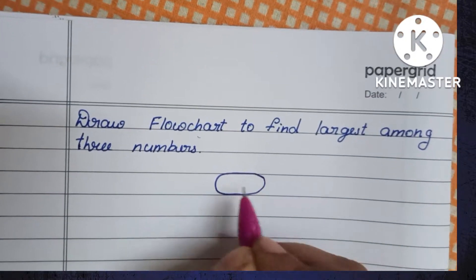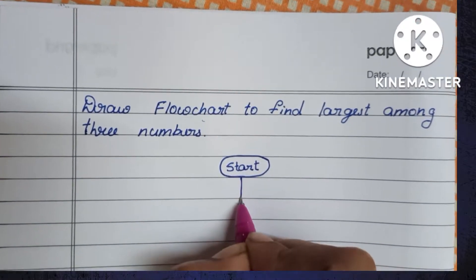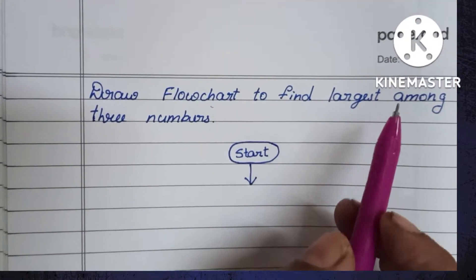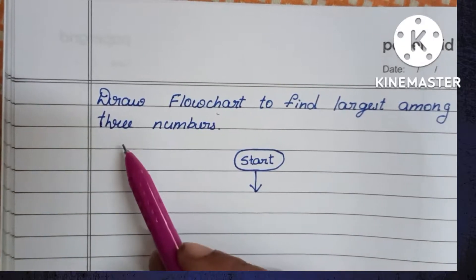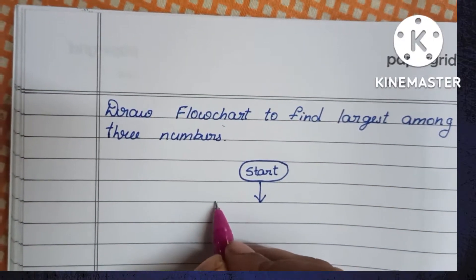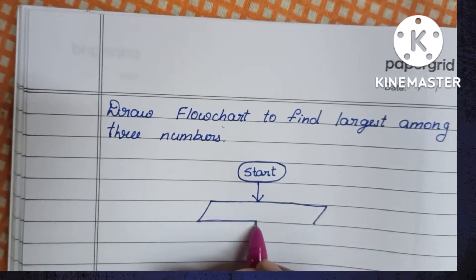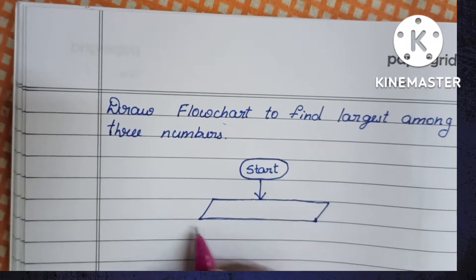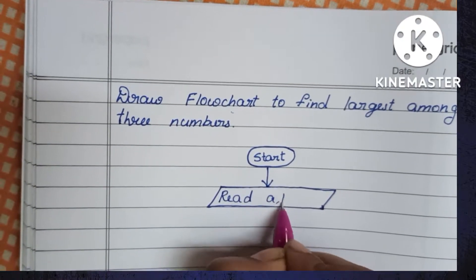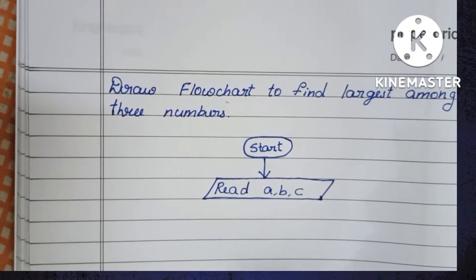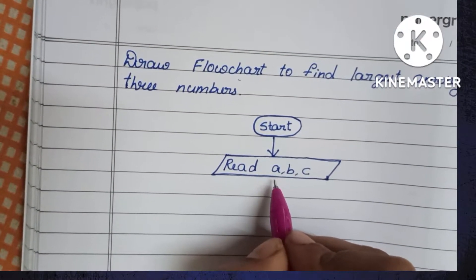Next, we have to read the input. To find the largest among three numbers, we have to read three numbers. The input statement is always written within a parallelogram shape, so draw a parallelogram shape. Within that, we have to read three numbers: A, B, and C.